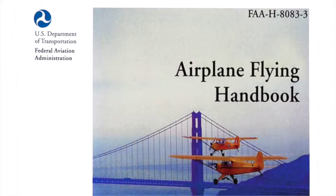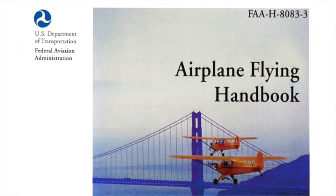Practical test standards may be downloaded from the Regulatory Support Division's AFS-600 website at http://afs600.faa.gov. Printed copies of practical test standards can be purchased from the Superintendent of Documents, U.S. Government Printing Office, Washington, D.C. 20402. The official online bookstore website for the U.S. Government Printing Office is www.access.gpo.gov.